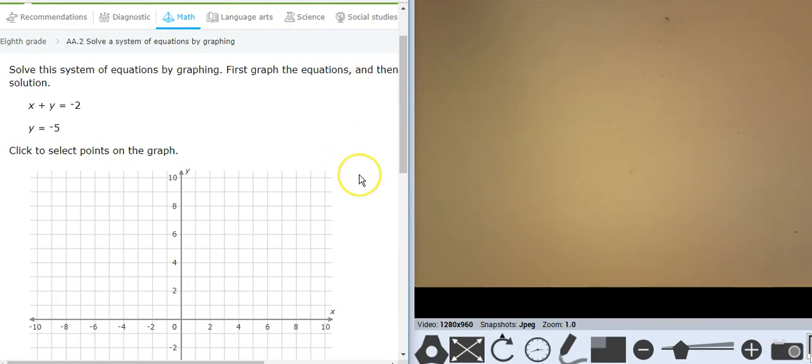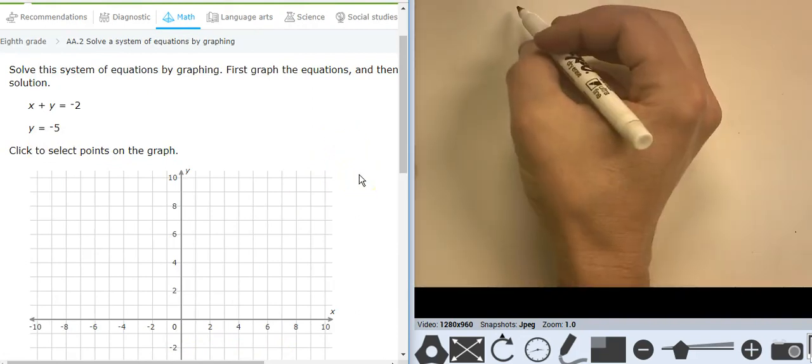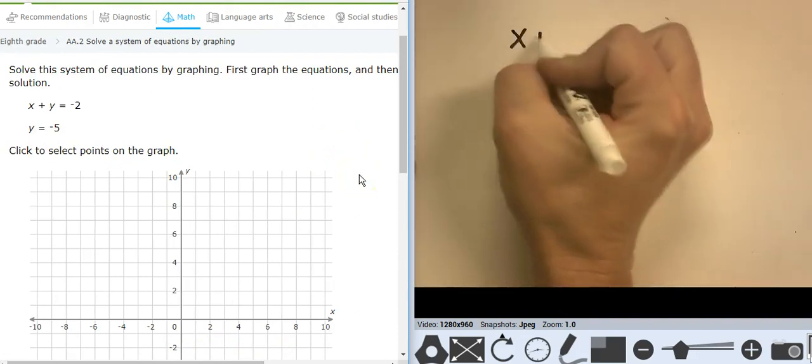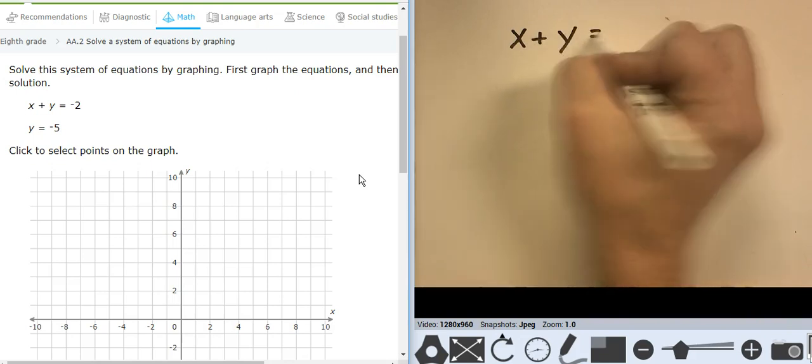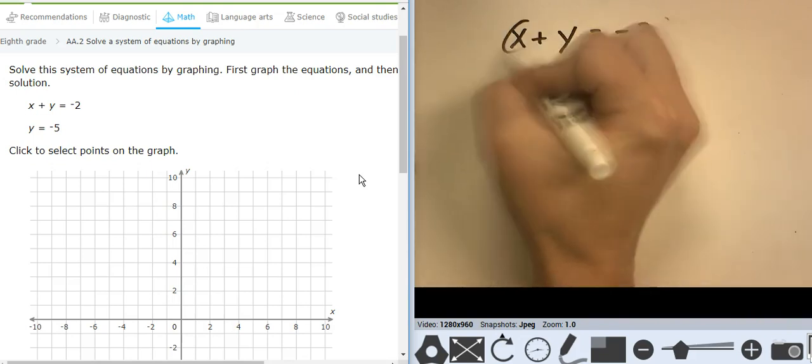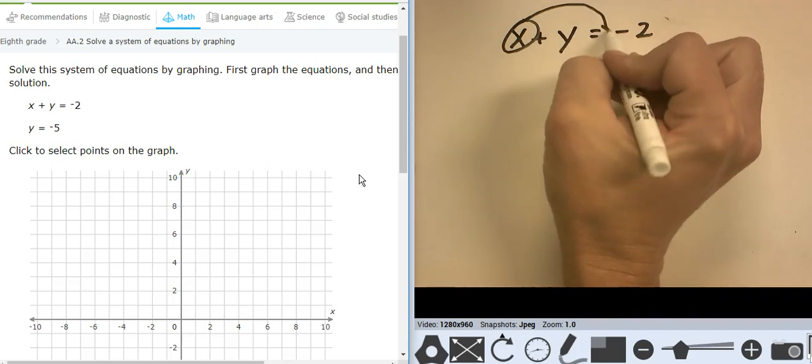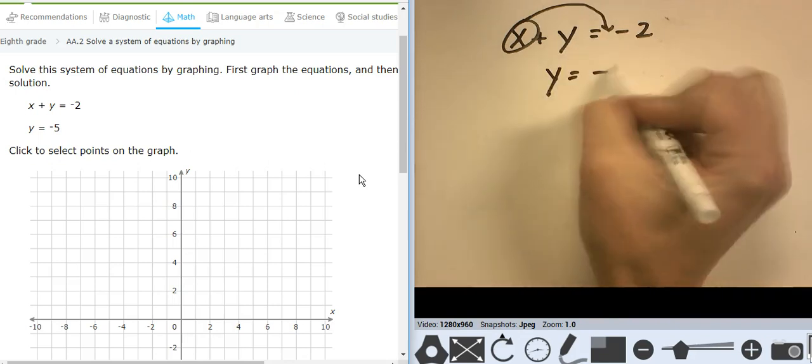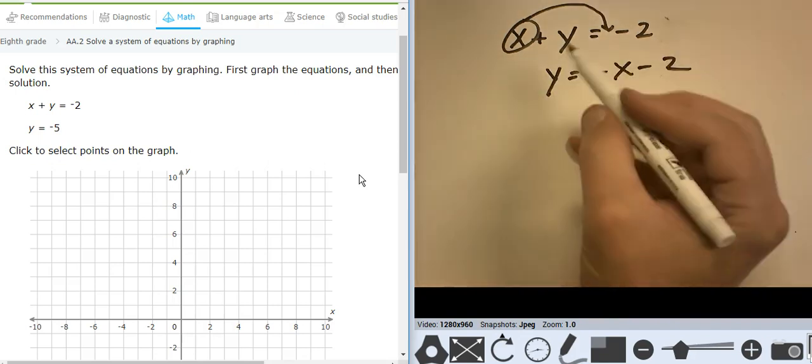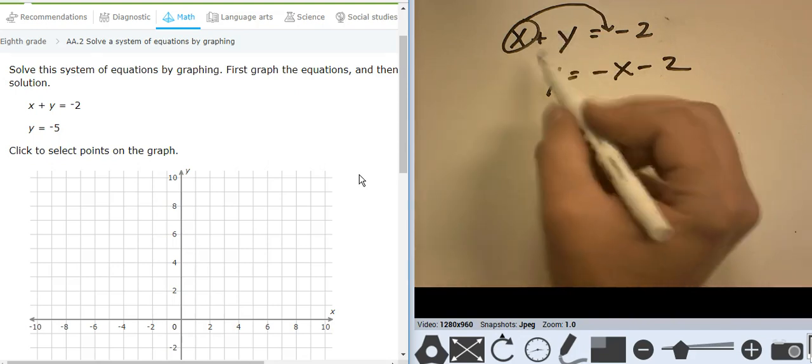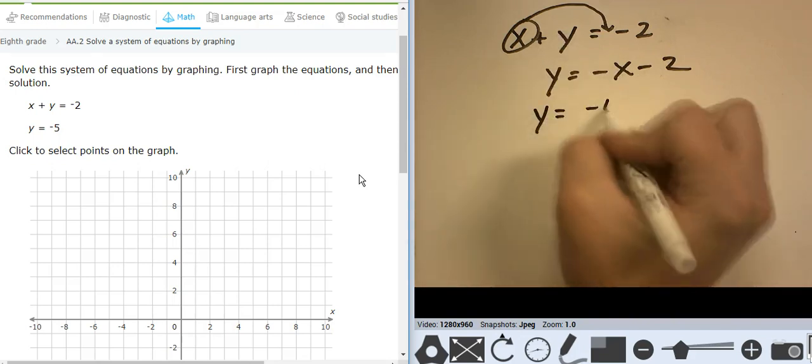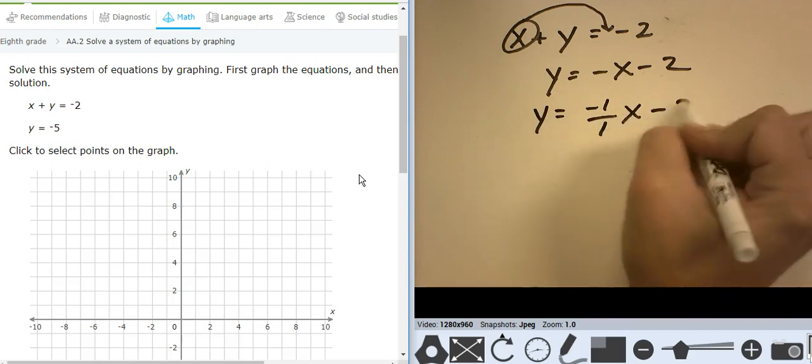Let's do one last one. So x plus y equals negative 2. Move the x. y equals negative x minus 2. Divide by the y. There's nothing to divide by. So let's just leave this as y equals negative 1 over 1x minus 2.